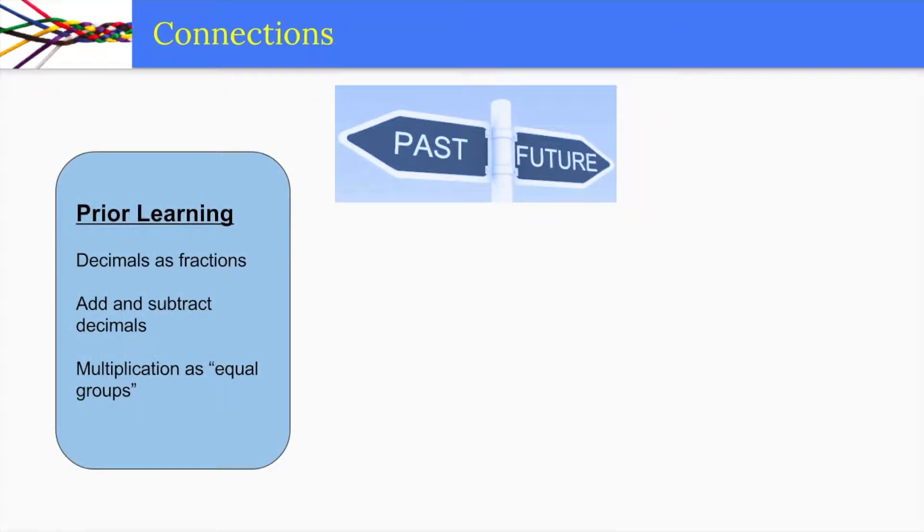It is important that students make connections between math they have already learned and math they are going to learn. Prior to this unit, students learned that decimals can be represented interchangeably as fractions or in decimal form. They also learned multiple ways to add and subtract decimals. They understand multiplication as equal groups.